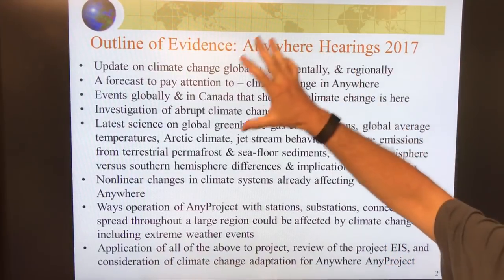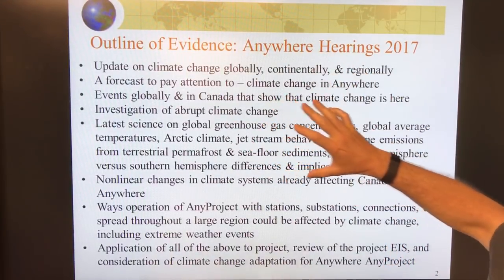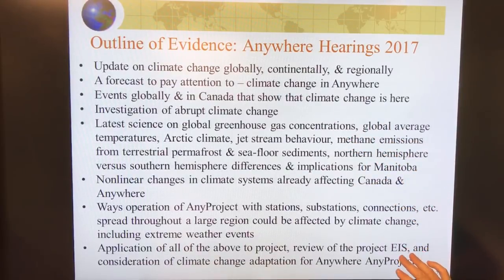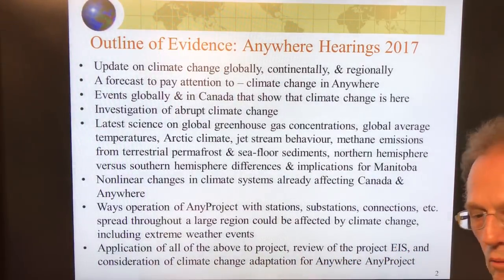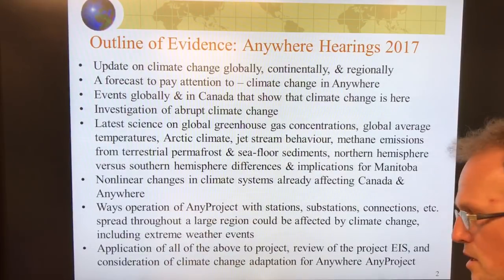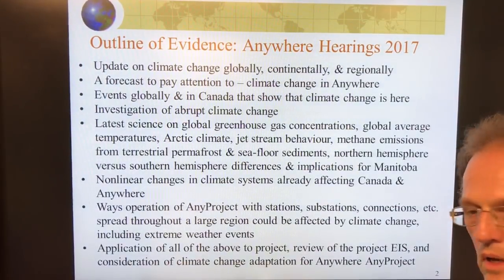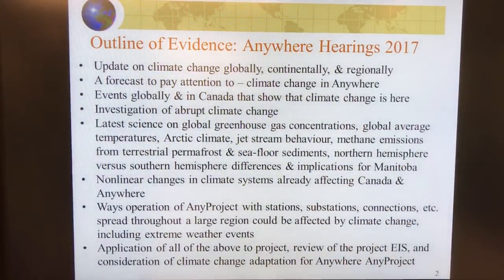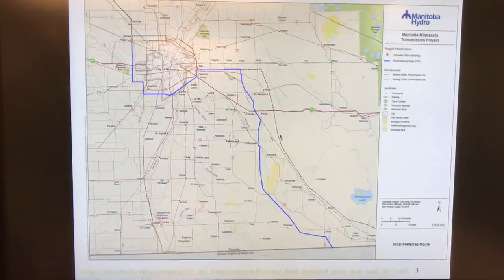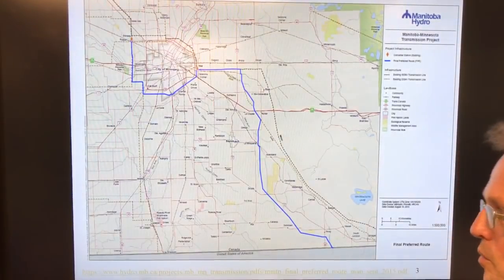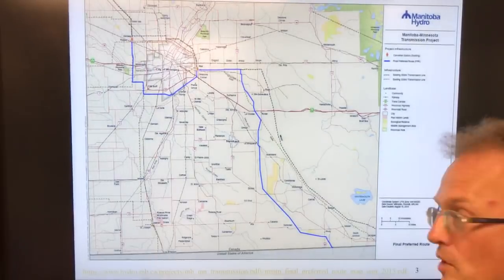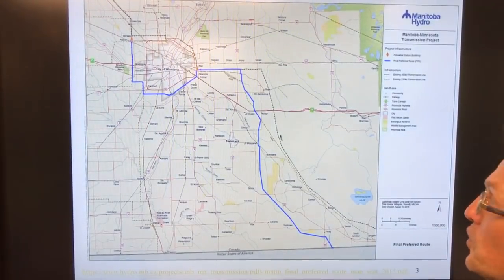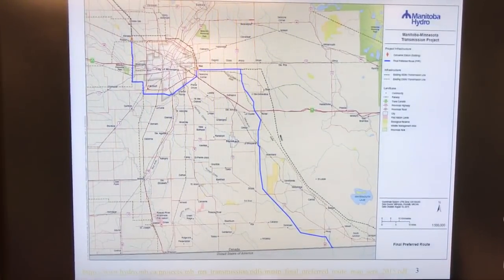I'll talk about the latest science on global greenhouse gas concentrations, global average temperatures, Arctic climate, jet stream behavior, methane emissions from permafrost and seafloor sediments, northern hemisphere versus southern hemisphere differences and implications for anywhere. Nonlinear changes. This project may be a distributed project with stations, substations, connections spread throughout a large region that could be affected by climate change, including extreme weather events. How do we apply all of these to the project environmental impact study or environmental assessment? We have to have an understanding of how climate change is going to play out in order to do this assessment properly. I would argue this is not being done properly just about anywhere in the world, just about everywhere in the world, anywhere and everywhere.